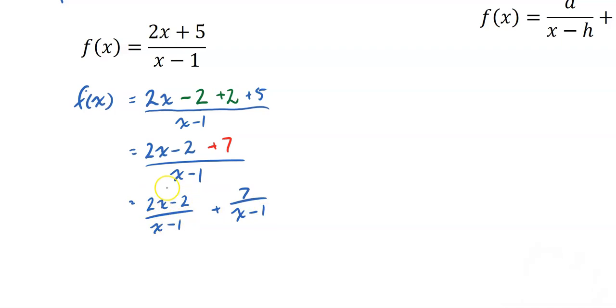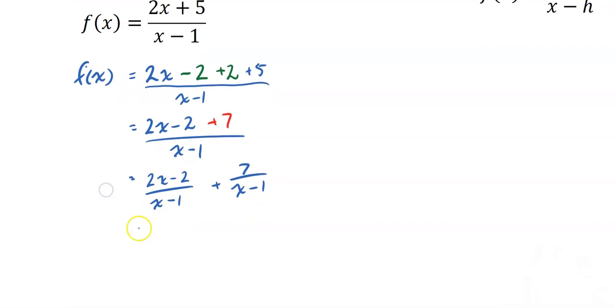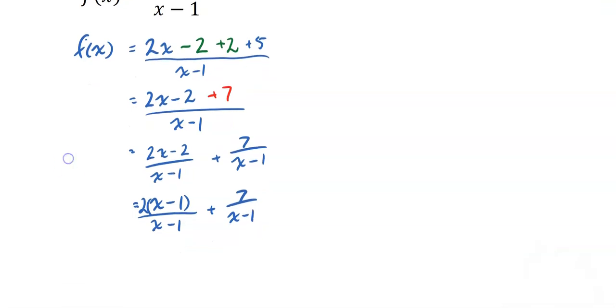Now paying attention to this bit here, we can factorize the top so that we get an x minus 1, x minus 1, and then 2 out the front, x minus 1, plus 7 over x minus 1. And finally, those x minus 1s cancel out and I get 2 plus 7 over x minus 1.